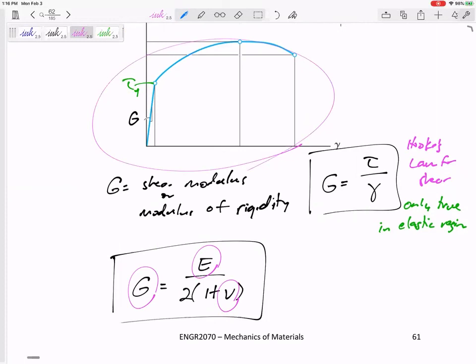You have to know two out of those three, G, E, and nu in order to find the third. If you can remember that equation, not too bad. I was just one thing.